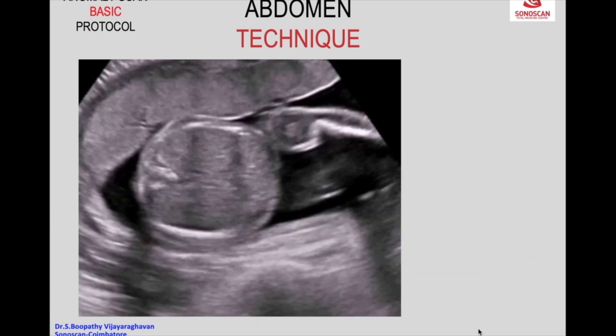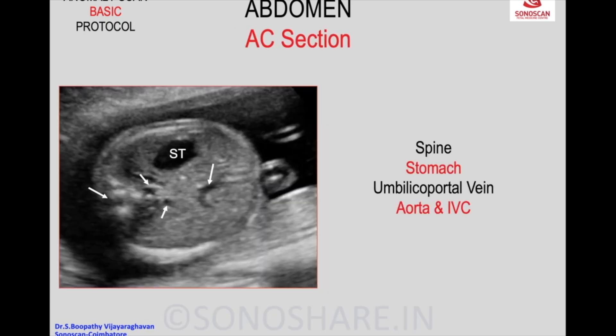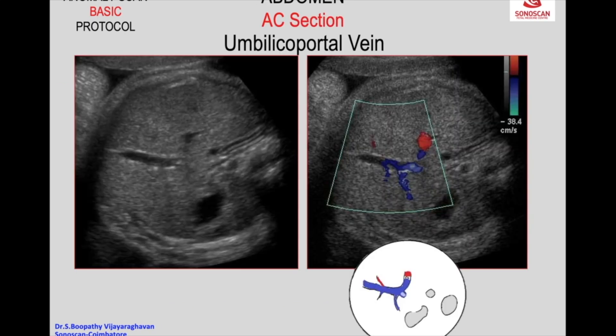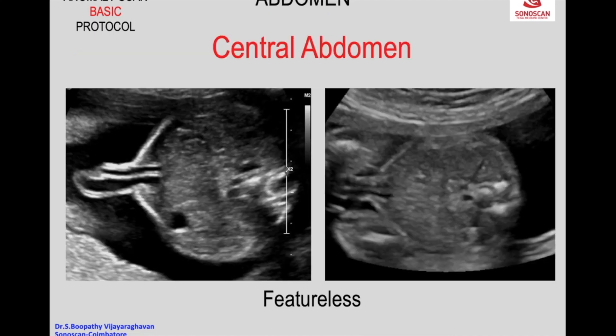This is the technique to take the coronal section. The video shows the aorta and the IVC. The liver is outlined by the line, and the spleen is posterior-lateral to the stomach. Then we concentrate on the umbilical portal vein. The umbilical vein enters the abdomen through the umbilicus and extends in a postero-cephalic direction. You can also see the cord insertion into the fetus, and you can put on color to confirm the cord insertion.